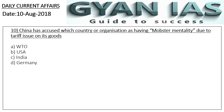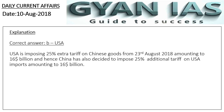Question 10: China has accused which country or organization of having a 'mobster mentality' due to tariff issues on its goods? Options: WTO, USA, India, or Germany. The correct answer is USA. The USA is enforcing 25% extra tariffs on Chinese goods from 25th August 2018, amounting to 16 billion dollars. In response, China has also decided to impose 25% additional tariffs on USA imports worth 16 billion dollars.